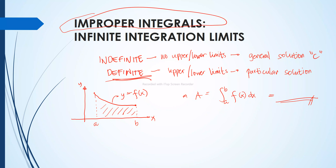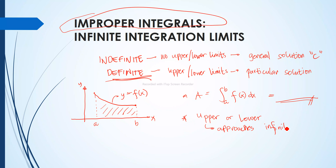So what is an improper integral? An improper integral happens when one of your limits — either your upper or lower limit — approaches infinity. So again, an improper integral is a definite integral with upper and lower limits, but either the upper or lower limit approaches infinity, or both.